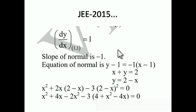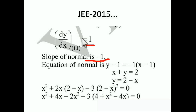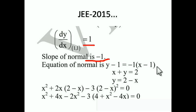dy/dx = 1 is the slope of the tangent. The slope of the normal is the negative reciprocal, which is −1. Using the line equation y − y₀ = m(x − x₀), we get y − 1 = −1(x − 1), so y − 1 = −x + 1, which gives x + y = 2, i.e., y = 2 − x. This is the equation of the normal line.